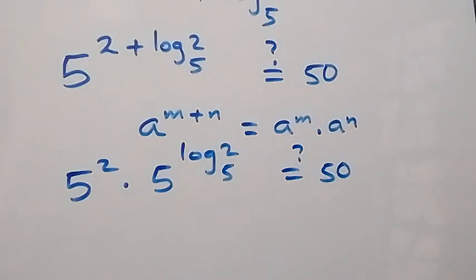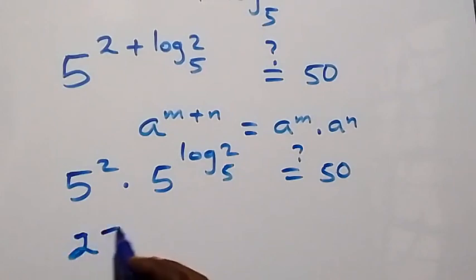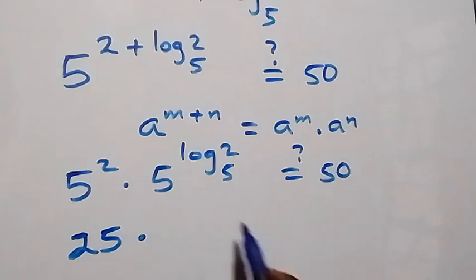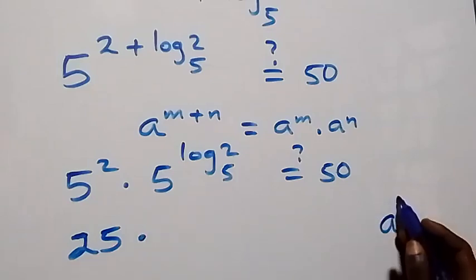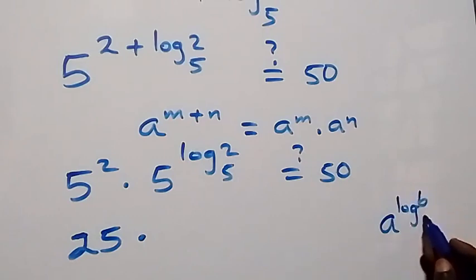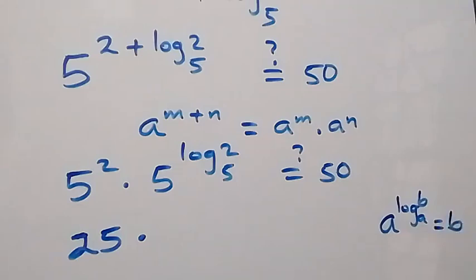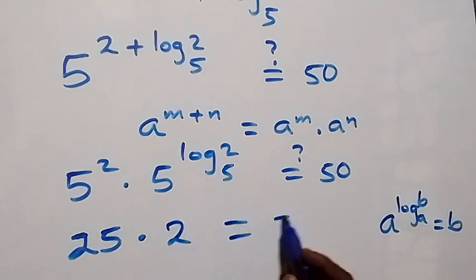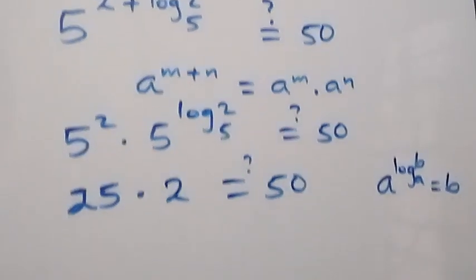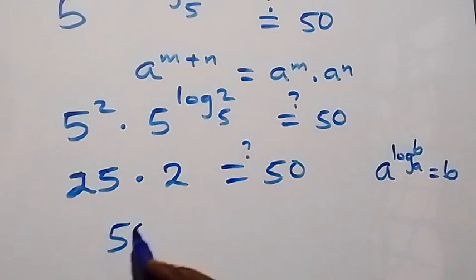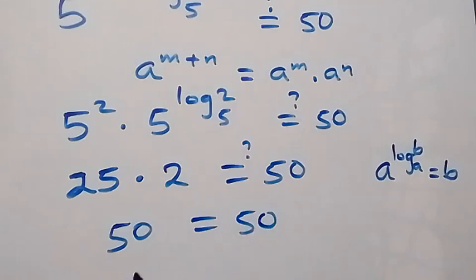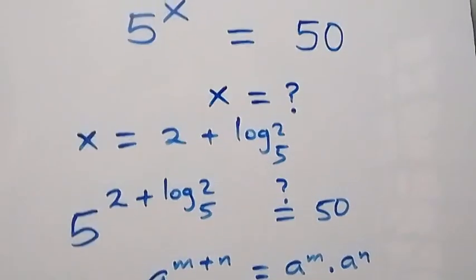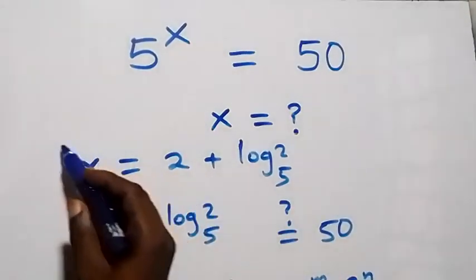Now 5 squared is 25. Then from the law that a raised to power log b to base a equals b, 5 raised to power log 2 to base 5 is just 2. So we have 25 times 2, which equals 50, and that equals 50. Therefore the left hand side equals the right hand side, and hence x equals 2 plus log 2 to base 5 satisfies this given problem.